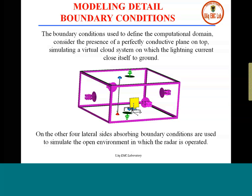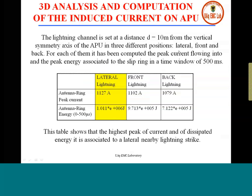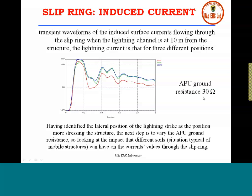Different cases are studied: what happens if the lightning strike occurs laterally, in front, or at the back of the radar. Using CST Microwave Studio, the peak current in the slip ring was evaluated. We see that the peak current occurs for lightning strokes that happen lateral to the radar system. Here you see the waveforms: black is back lightning, red is front lightning, and blue — lateral — is where we find the maximum current in the slip ring.